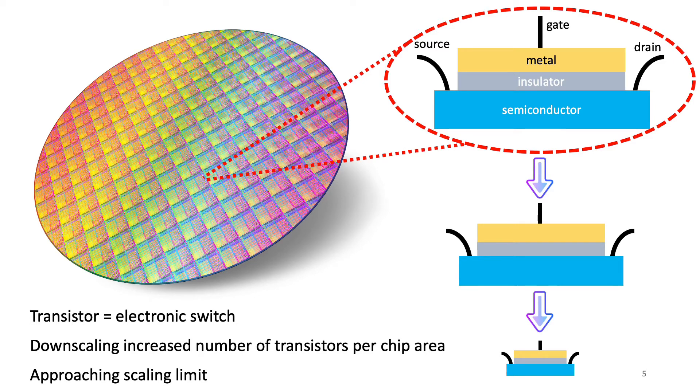For many decades the improvement in electronics was a result of scaling down the transistor dimensions. This allowed to fit more transistors in the chip area, which led to increased performance. However, nowadays these transistors become so small that it gets harder and harder to continue shrinking. Therefore, we need to find other ways to improve the computing power of integrated circuits. And spintronics can be a solution.